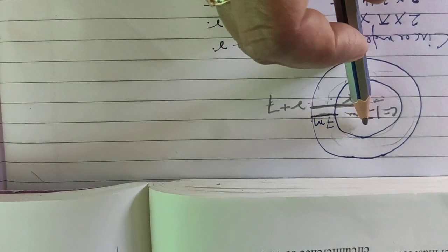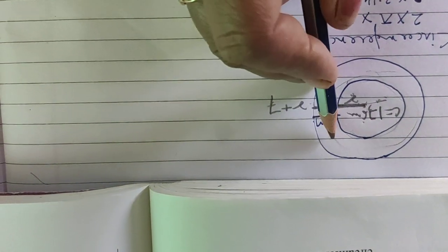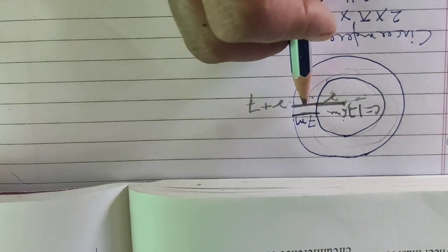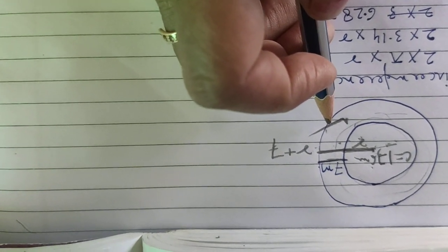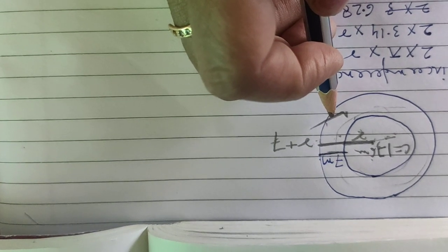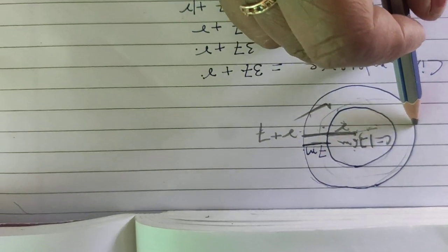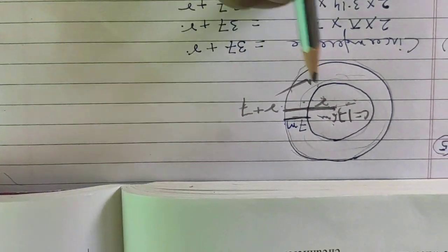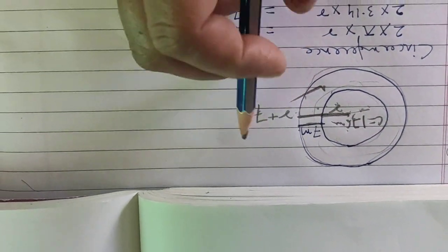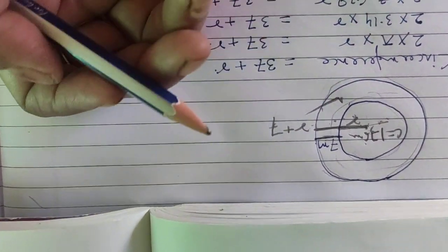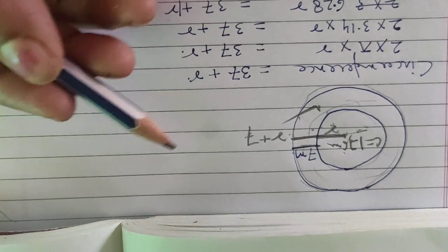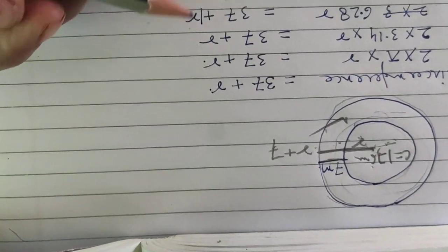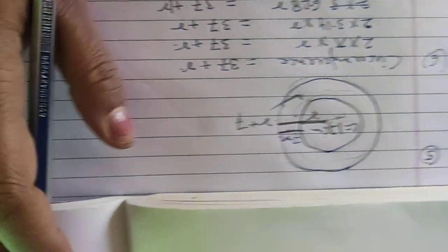You have to find out the area of the inner circle and the area of the outer circle, then subtract them to get the area of the pathway. That was the first part. The second part asks you to put fencing around the outer circle at the rate of 12 rupees per meter, so find the circumference of the outer circle and multiply by 12 to get the fencing cost.